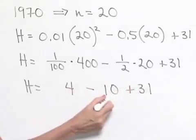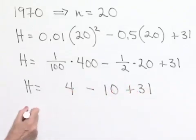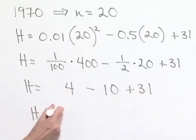So we'll end up with 4 minus 10, which is negative 6, plus 31. And that gives us our value of H equal to 25.